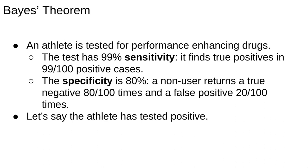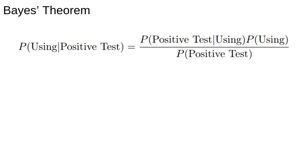Let's say the athlete has tested positive. We write down Bayes' theorem for our situation. We want the probability that the athlete is using drugs, given that they had a positive test. Bayes' theorem lets us write this in terms of three other probabilities: the probability that they had a positive test given that they are using drugs, the probability that any athlete is using drugs P(using), and the probability to have a positive test. We can calculate each of the things on the right and therefore calculate the left hand side.